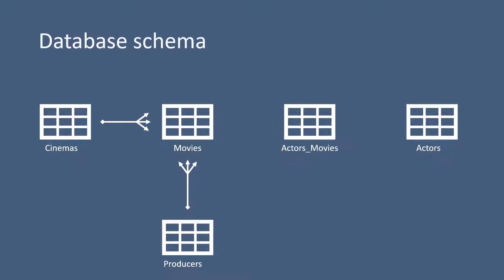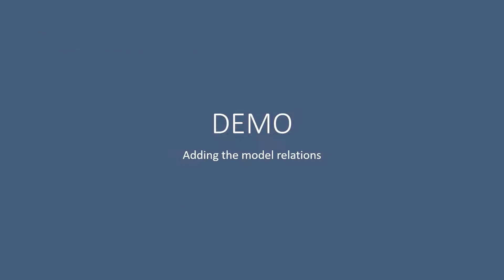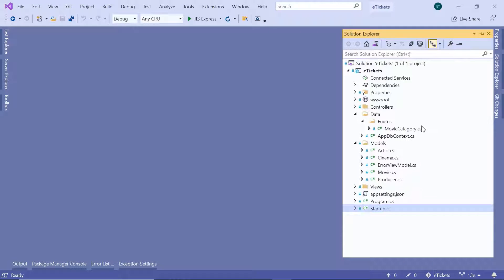In the middle we are going to have the actors_movies join model or join table in the database, and then we have a one-to-many relationship between movies and actors_movies, and the same one-to-many between actors and actors_movies. Now let us go to Visual Studio and define all these relationships in our code.